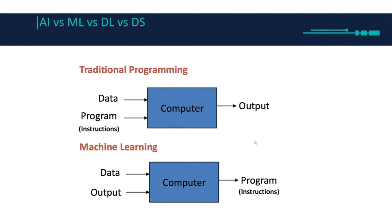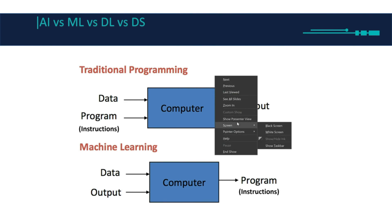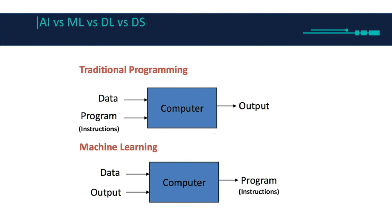In order for us to understand machine learning, we need to know how traditional programming works. In machine learning, we give the data and we give the output — the outcomes — and then machine learning finds something called patterns in the data and gives us the instructions or rules of the program. In traditional programming, I give the data and I write the instructions — if statements, loops, and all that stuff.